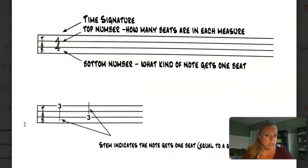Also, you can have a time signature on a tablature staff. It's giving us the same information. The top number tells us how many beats are in each measure. The bottom number tells us what kind of note is equal to the beat.